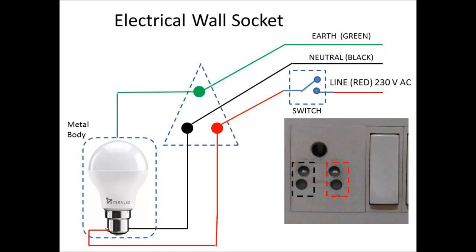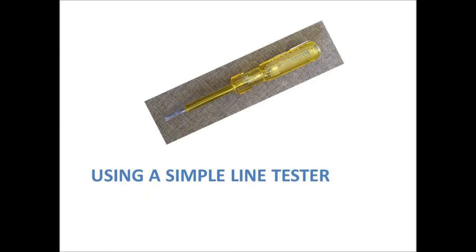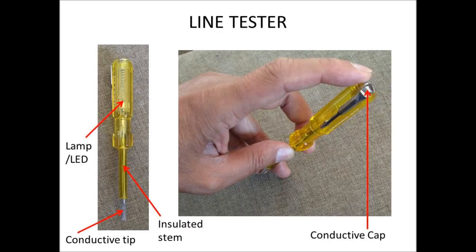There have been instances of some electricians carelessly connecting the switch on the neutral. If this is the case, then the line voltage would come to the appliance even when the switch is off and can be a hazard. Lastly, the earth wire should be connected to the metal body — say the bulb holder or lampshade. It is worth ensuring that the wiring has been done correctly. This verification can be done with a simple screwdriver-like instrument called the line tester. It is a low-cost device available in all electrical stores and worth purchasing.